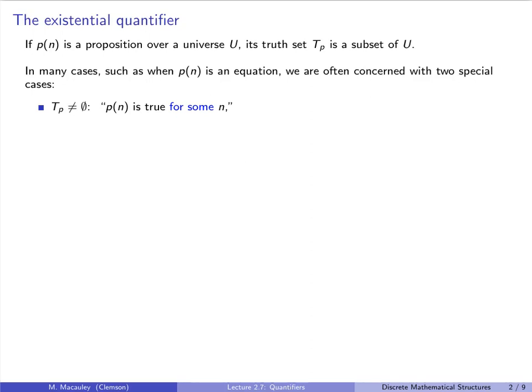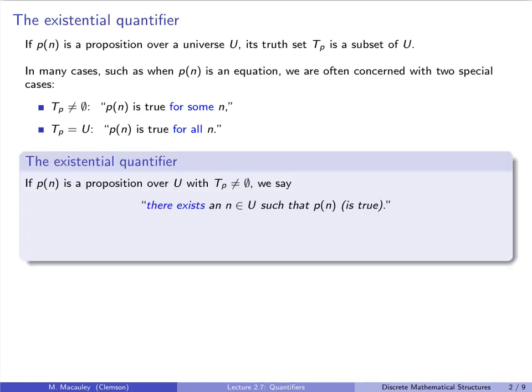The first case is: when is the truth set non-empty? In plain English: when is P true for some values of N, at least one? The next case is: when is the truth set the entire universe? In other words, when is P true for all values of N?